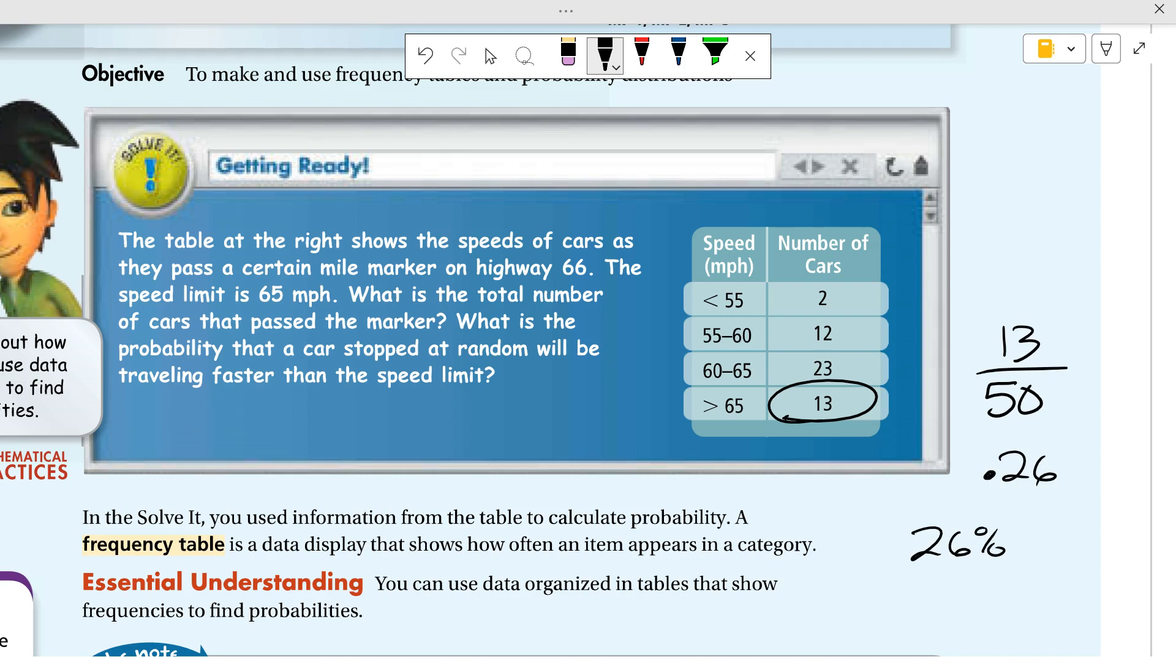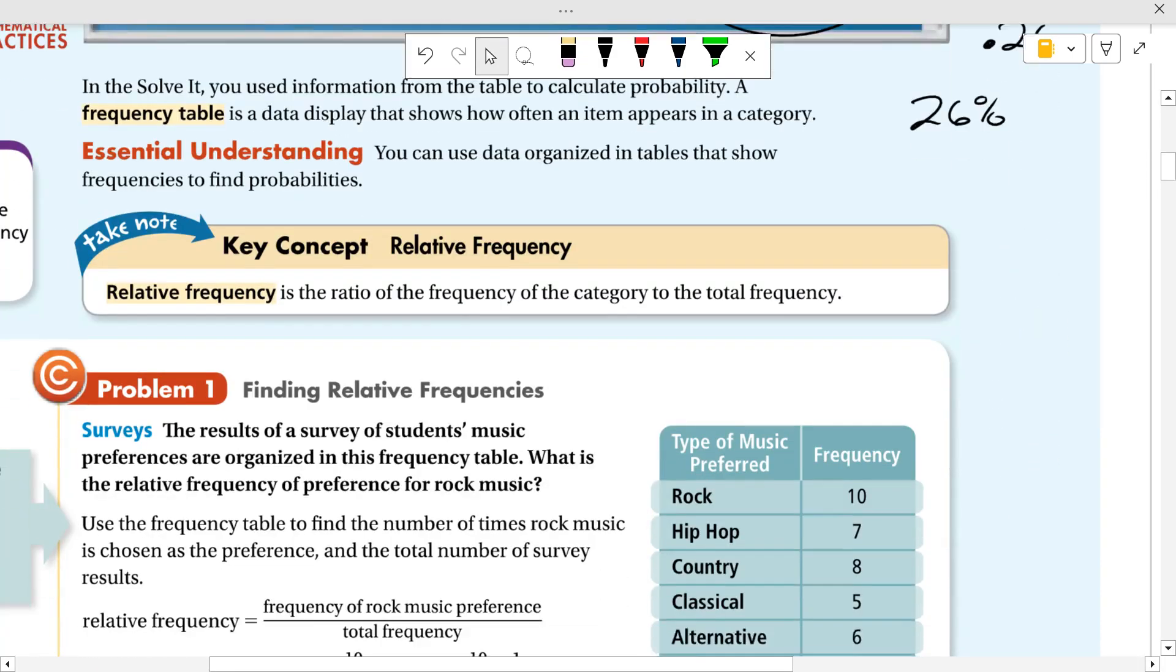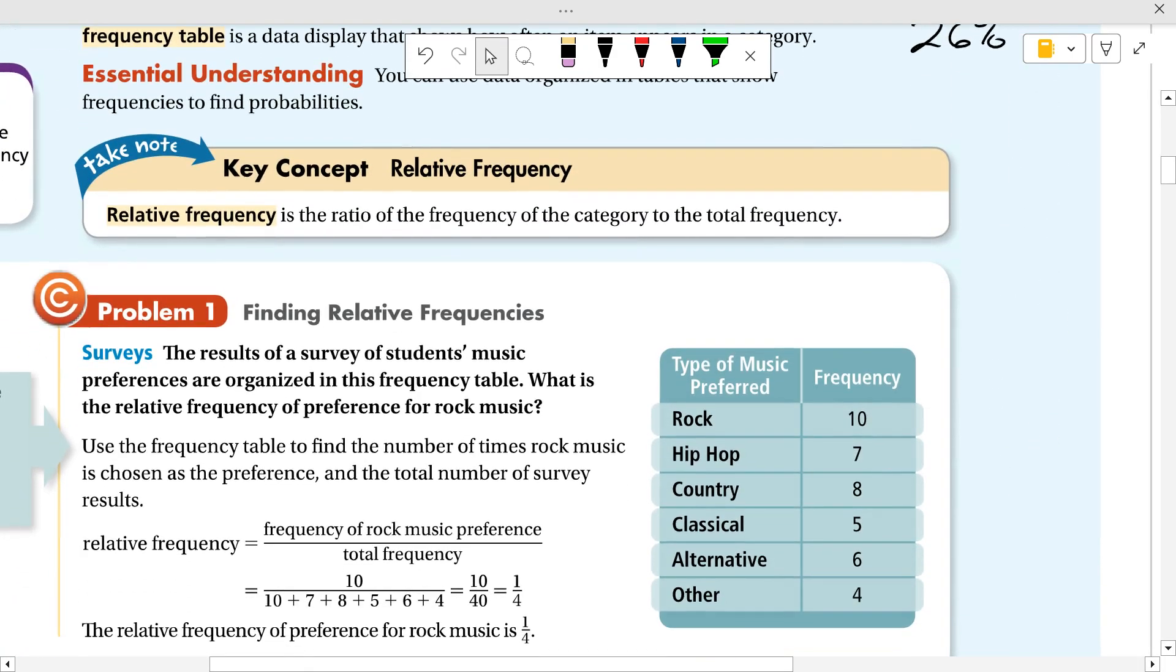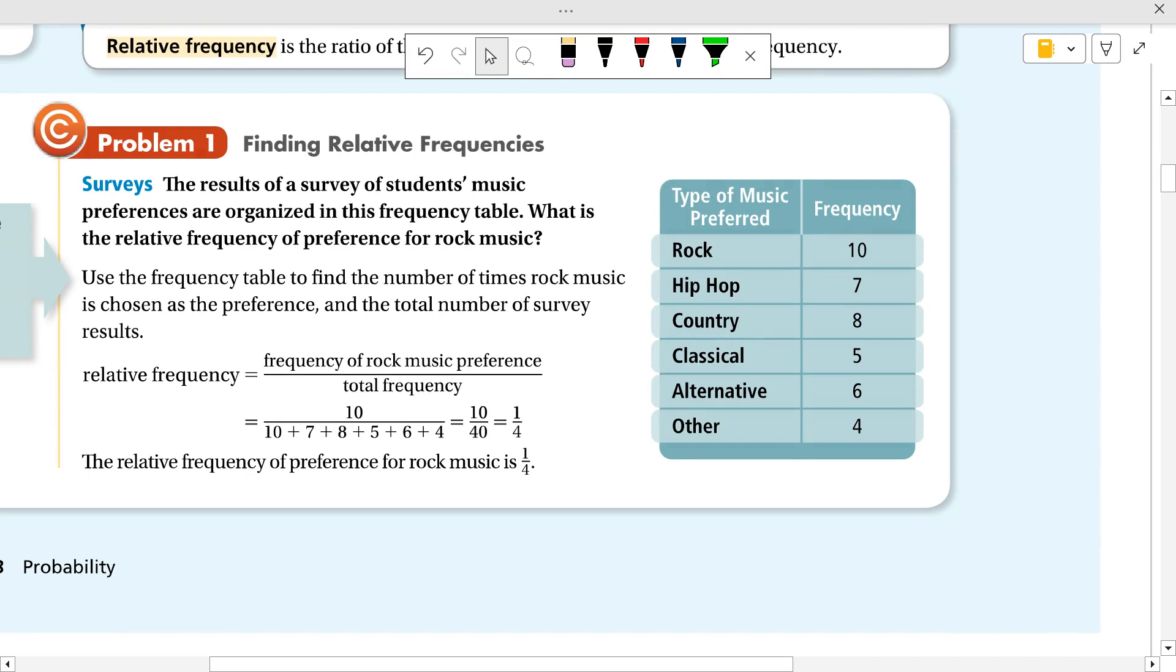Okay, a frequency table is just using a table with numbers to figure out probabilities. That's all it is. The relative frequency is the ratio of the frequency of a category to the total frequency. So here's the type of music preferred and the number of people that preferred it. The first thing you need to do is add up all the numbers.